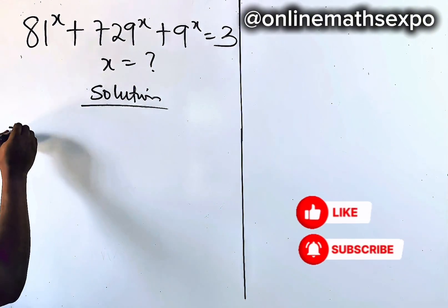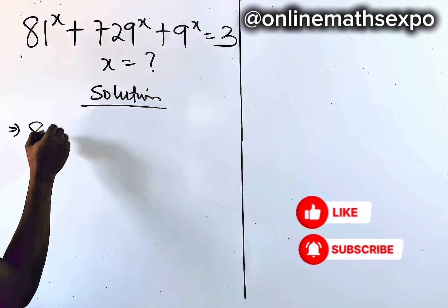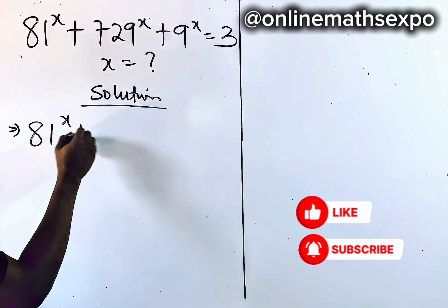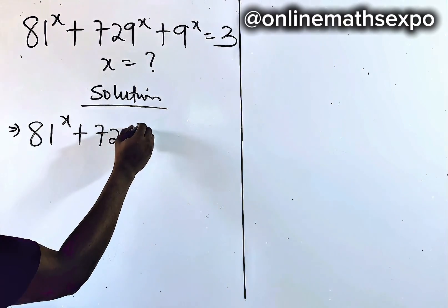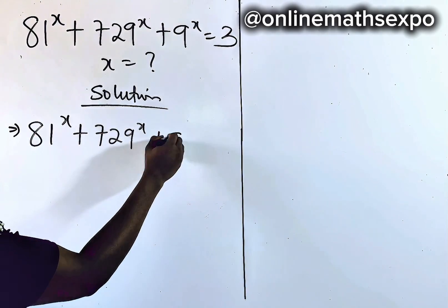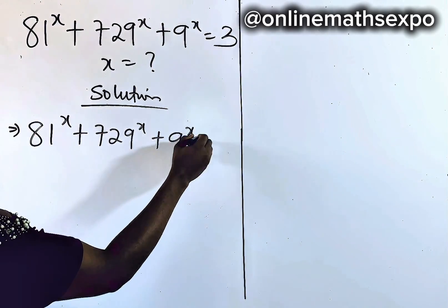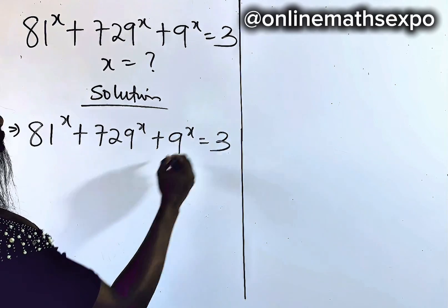We begin with 81 to the power of x, plus 729 to the power of x, plus 9 to the power of x, and this is equal to 3.